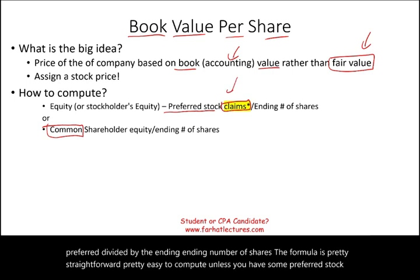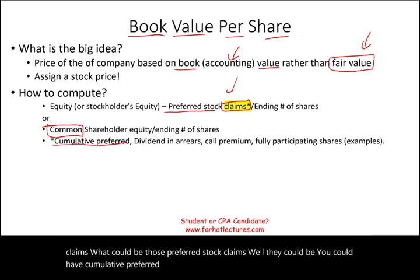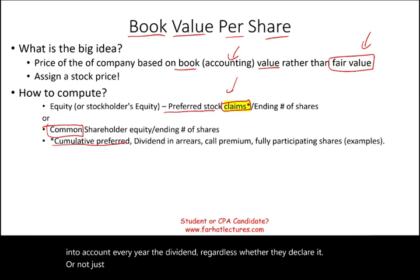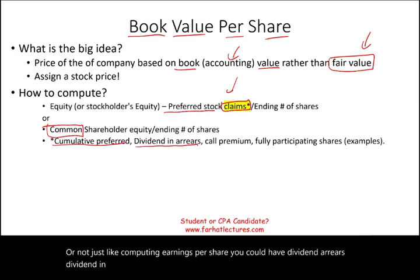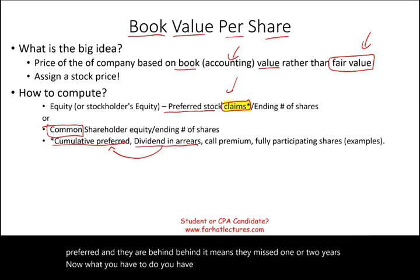What could those preferred stock claims be? You could have cumulative preferred, where you have to take into account every year's dividend regardless of whether they declared it or not — just like computing earnings per share. You could also have dividends in arrears, when the company has cumulative preferred and they are behind, meaning they missed one or two years. You have to take those dividends in arrears into account in your computation.